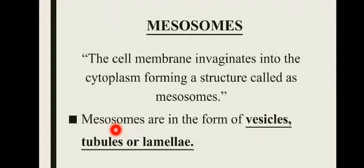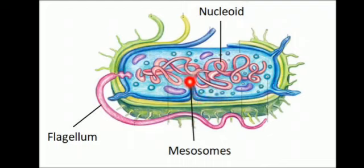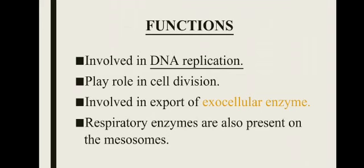اگر plasma membrane چھوٹی چھوٹی پرتیں بناتی ہے تو اس کو lamellar mesosomes کہتے ہیں۔ مطلب mesosomes تین طرح کی shape show کر سکتے ہیں۔ Diagram میں آپ دیکھ سکتے ہیں کہ blue color میں جو cell membrane ہے وہ اندر کی طرف pinch ہوئی ہے، جب یہ invaginate کرتی ہے تو اس structure کو mesosomes بولتے ہیں۔